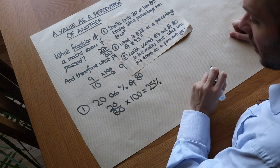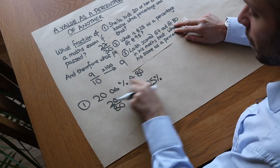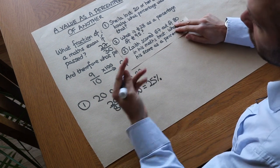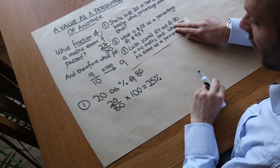So we've got 25 percent. And that seemingly makes sense because 20 out of 80 is a quarter, and a quarter is 25 as a percentage.